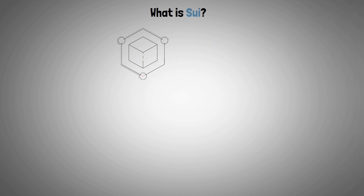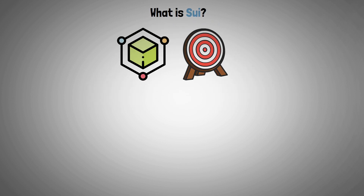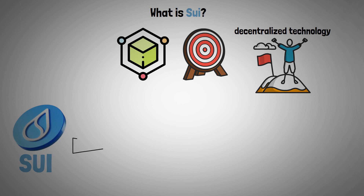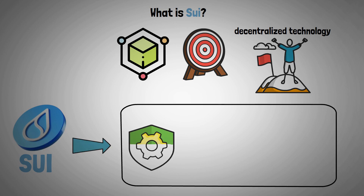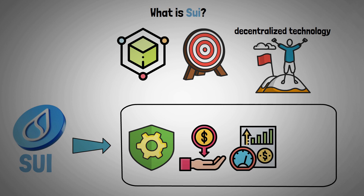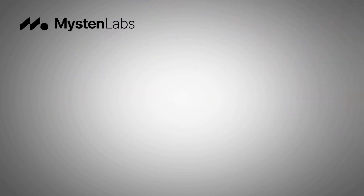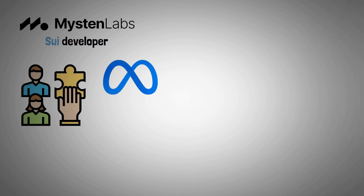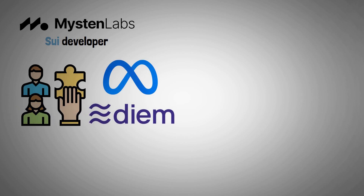SUI is a blockchain that aims to make decentralized technology accessible to everyone. SUI's native token is employed to protect the network, cover gas costs, speed up on-chain transactions, and in the future enable governance. Mysten Labs, SUI's base developer, was established by former Meta workers who contributed to the Diem blockchain project, formerly known as Libra.